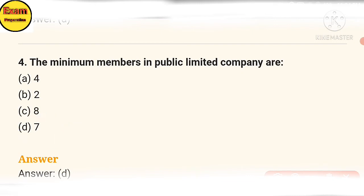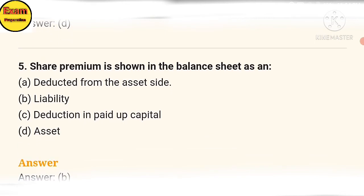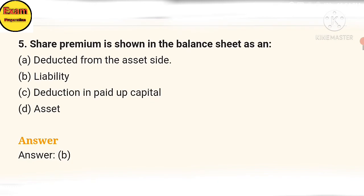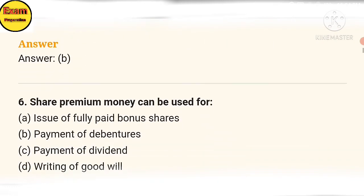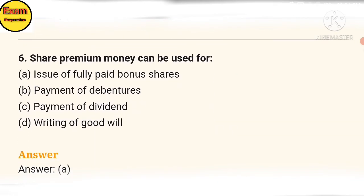Fifth question: share premium is shown in the balance sheet under liabilities. The answer is option B. Sixth question: share premium money can be used for issuing fully paid bonus shares.